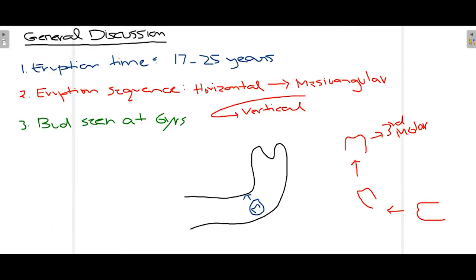Mandibular and maxillary third molars are normally the last teeth to erupt in the oral cavity. Their eruption time is around 17 to 25 years of age, and they can erupt anywhere within that time period. The bud of the third molar can generally be seen on a panoramic radiograph of a child at six years of age, either in the maxilla or mandible.